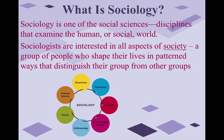Sociologists are interested in all aspects of society. Societies are just groups of people who shape their lives in patterned ways that distinguish their group from other social groups. The social sciences are really interested in understanding the social world the same way that the natural sciences are interested in understanding the natural or physical world. Social scientists and natural scientists even use many of the same research methods, including the scientific method, which we'll talk about much more in chapter two.